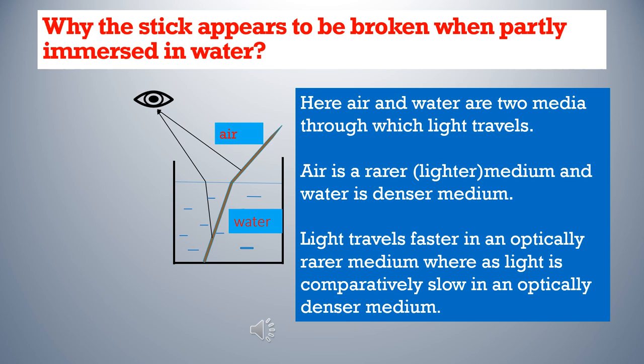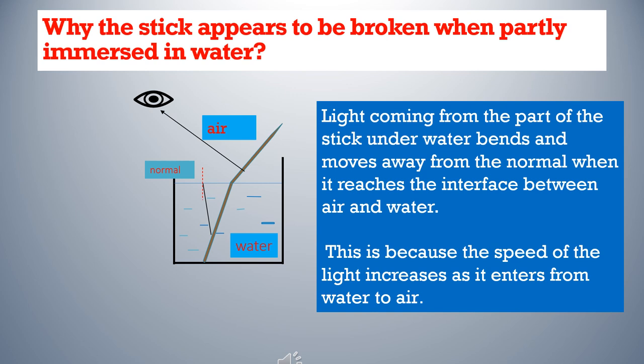Why does the stick appear to be broken when partly immersed in water? We see an object when reflected light from that object reaches our eyes. Here air and water are two media through which light travels. Air is a rarer or lighter medium and water is a denser medium. Light travels faster in an optically rarer medium whereas light is comparatively slow in an optically denser medium. Light coming from the part of the stick underwater bends and moves away from the normal when it reaches the interface between air and water, because the speed of light increases as it enters from water to air.